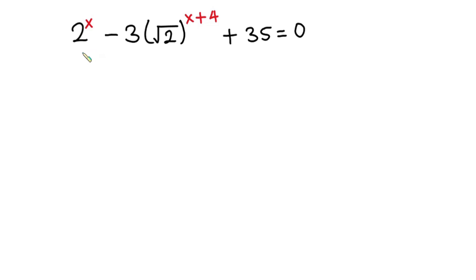Hello everyone. In this video, we have this interesting problem: 2 to the power x minus 3, into the square root of 2 to the power x plus 4, plus 35 is equal to 0. And we have to find the value of x.